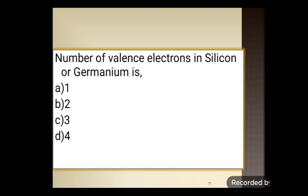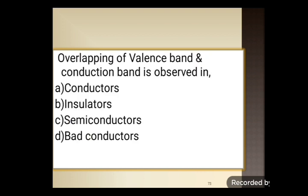Next question: the number of valence electrons in silicon or germanium is — options 1, 2, 3, or 4. The number of valence electrons in silicon or germanium is 4. Option D is correct. Next: overlapping of valence band and conduction band is observed in — conductor, insulator, semiconductor, or bad conductor. The overlapping of valence band and conduction band is observed in conductors only. Option A is the correct answer.